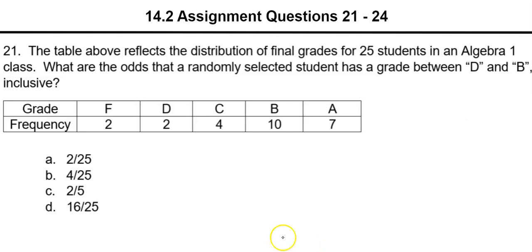I didn't make this but I really appreciate what somebody did, but let's change what it says. So the table below, first off we need to make that say below, reflects the distribution of final grades for 25 students in an Algebra 1 class. What are the odds that a randomly selected student has a grade between D and B inclusive?